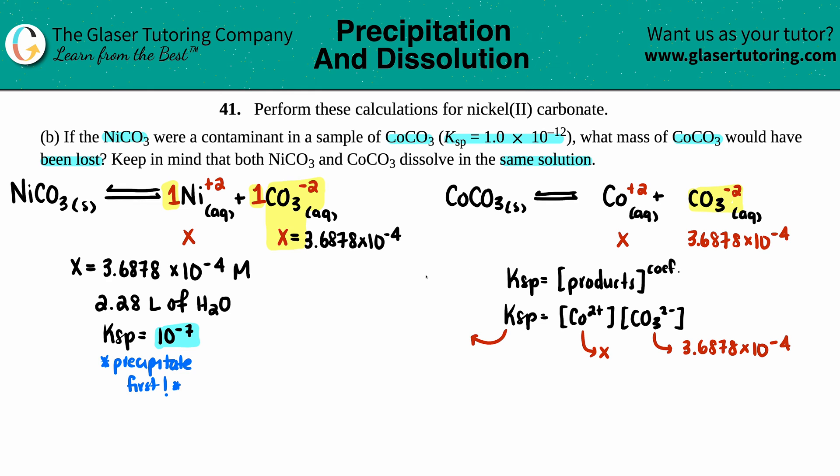The cobalt is going to be x, carbonate is 3.6878 times 10 to the negative fourth. The Ksp they gave us is 1.0 times 10 to the negative 12. Let's plug it in: 1.0 times 10 to the negative 12 equals x times 3.6878 times 10 to the negative fourth. We divide both sides by 3.6878 times 10 to the negative fourth. So 1 times 10 to the negative 12 divided by 3.6878 times 10 to the negative fourth gives us 2.7116 times 10 to the negative ninth molarity.